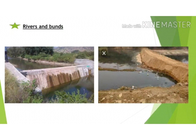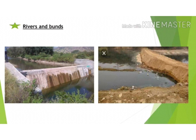The fourth old water store involves rivers and burns. Burns are barriers built across rivers to help control the flow of water. To build these burns, people used cement, concrete, stone, and soil.